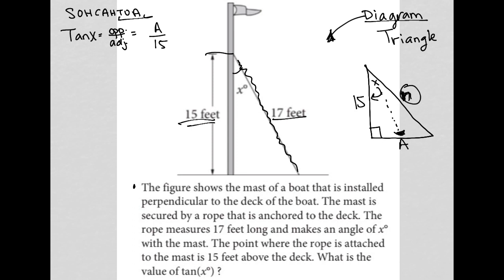So how do I find missing side A? So again, I'm going to redraw my right triangle, a little bit smaller, 15, 17, and A. So I could use Pythagorean theorem. I could say, well, 15 squared plus A squared equals 17 squared.